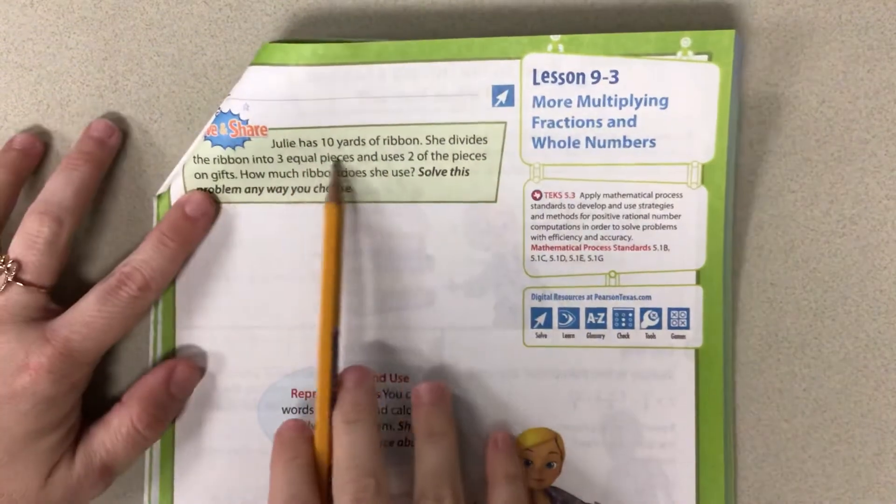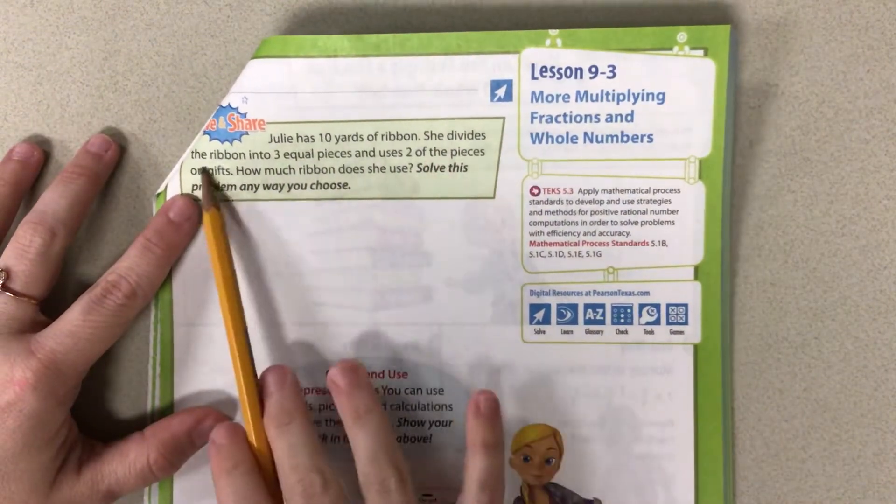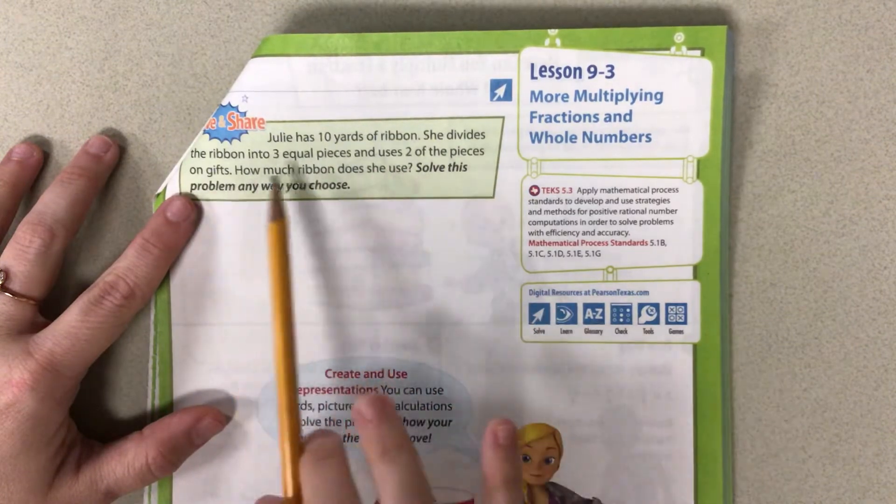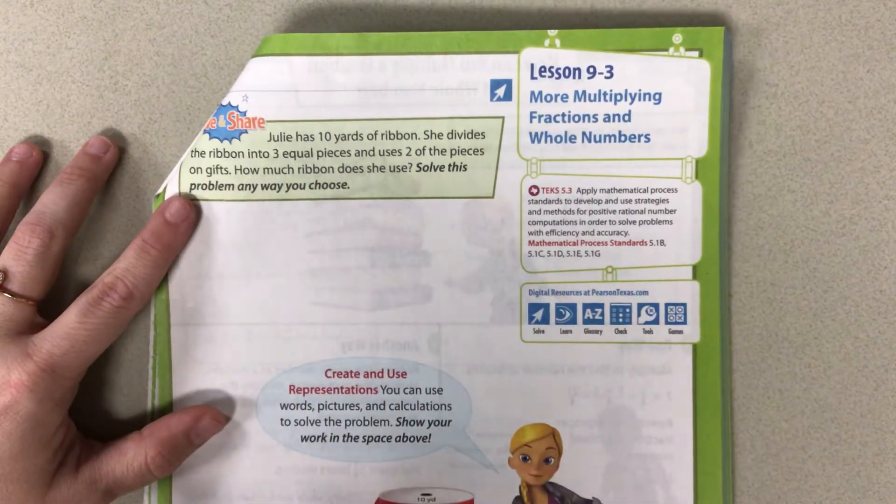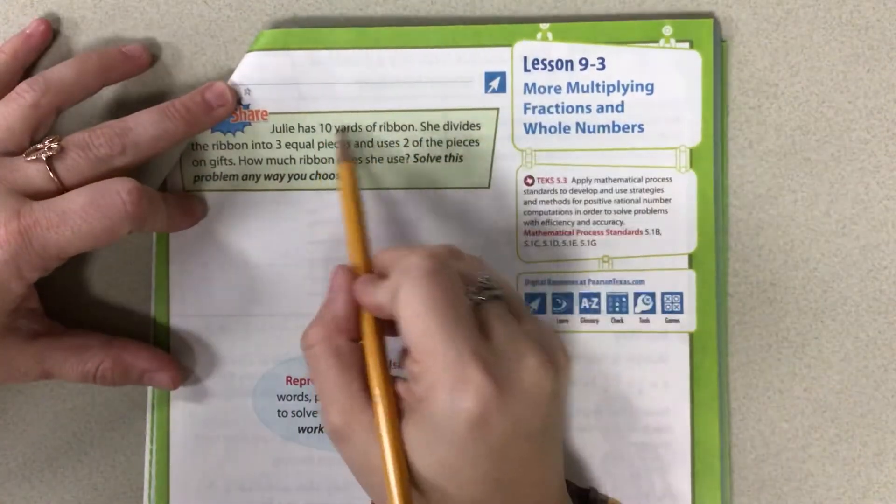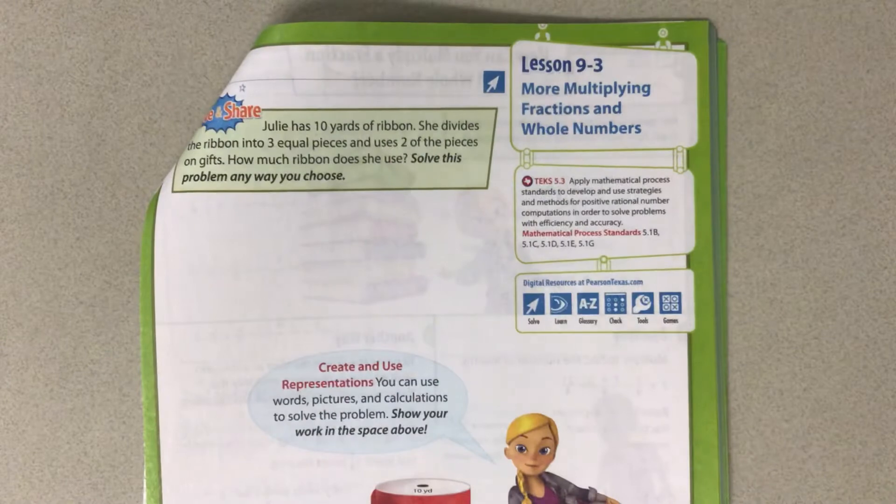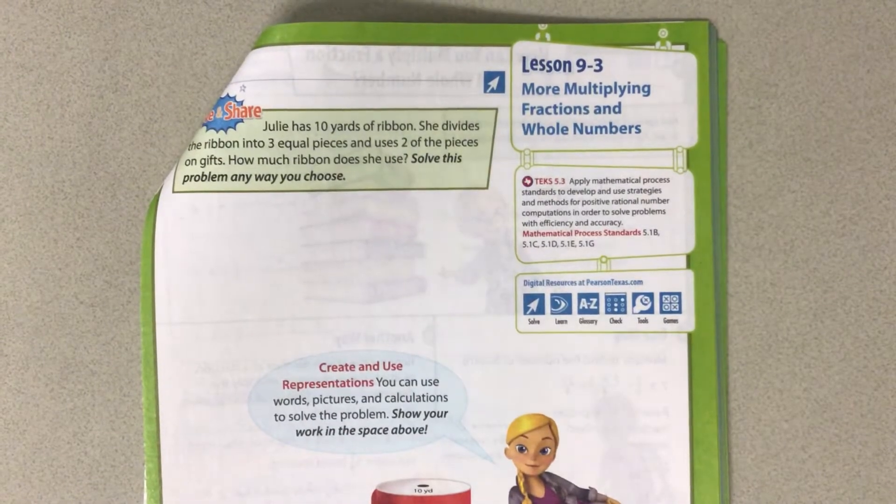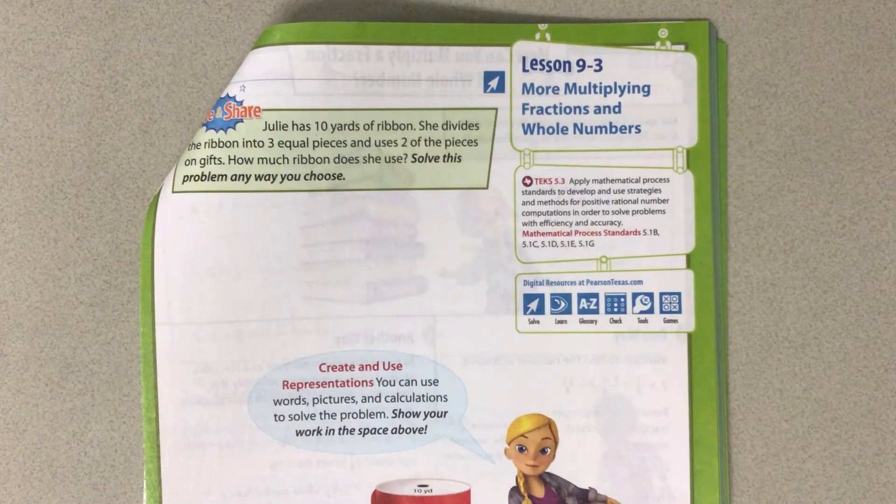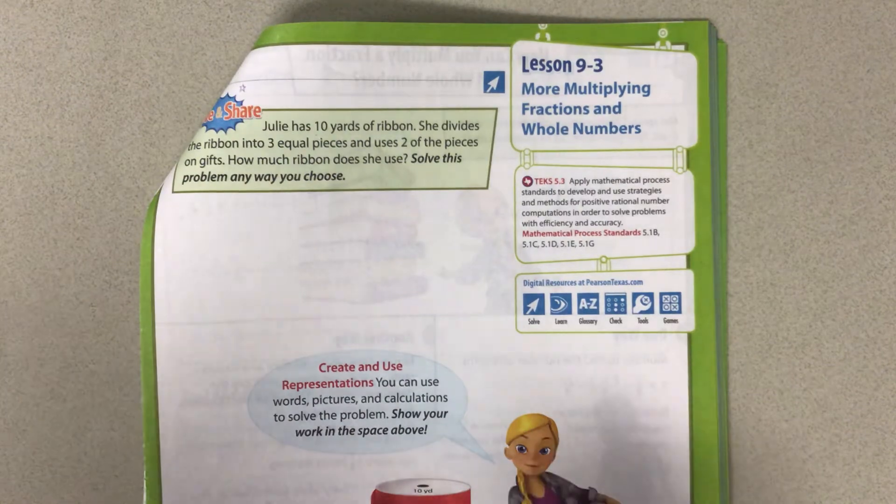So it says, Julie has 10 yards of ribbon. She divides the ribbon into three equal pieces and uses two of the pieces on gifts. How much ribbon does she use? So she has 10 yards of ribbon and she cuts that into three equal pieces and then she uses two of those pieces.